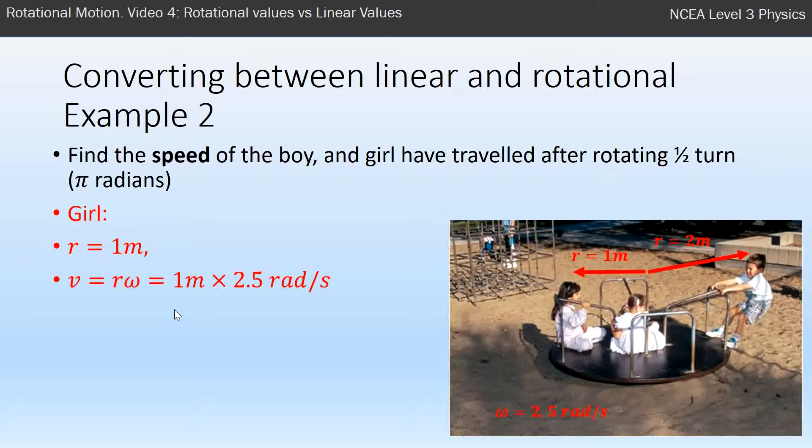Similar for the girl, she has a radius from the center to her of one meter, so it's just going to be a radius of one meter times the same angular frequency. It doesn't matter where they are, they're spinning or rotating at the same rate of 2.5 radians per second, and we get 2.5 meters per second.